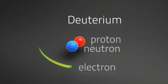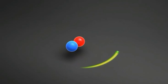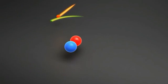A deuterium atom, with an electron orbiting around it, captures the muon, which in turn expels the electron.